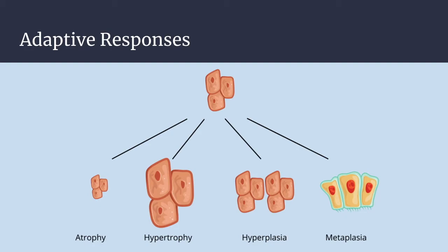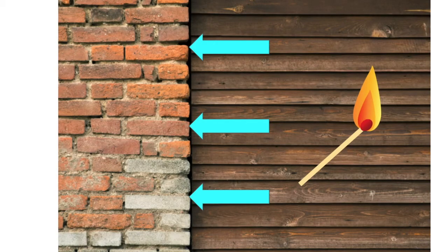The last adaptation is metaplasia — a reversible change in which one differentiated cell type is replaced by another differentiated cell type. To be clear, this is not a change in the phenotype of already differentiated cells; rather, it involves reprogramming of stem cells or undifferentiated cells within the tissue, which are then programmed to become a different cell type. These precursor cells differentiate down a different pathway, driven by cytokines, growth factors, and components of the extracellular environment.